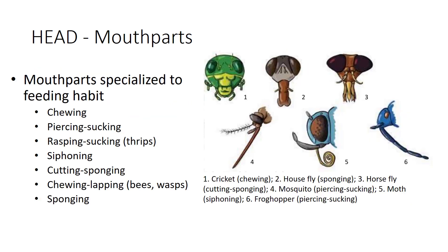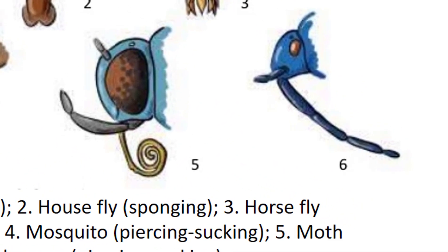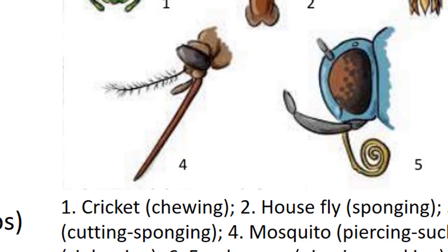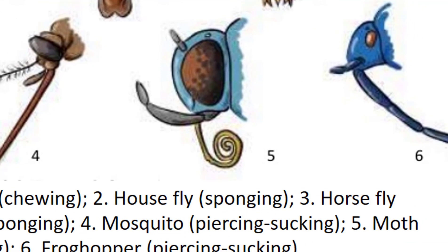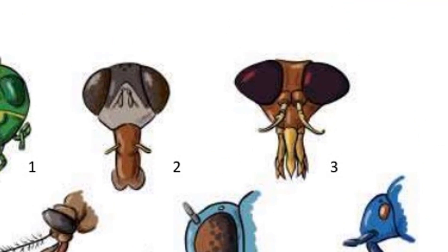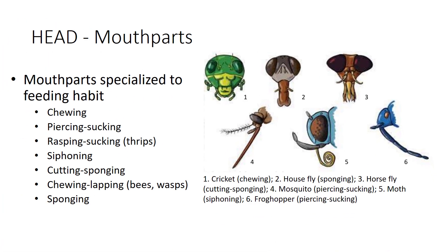Haustellate mouth parts are primarily used for sucking up liquids. They can be broken down into two subgroups—those that possess stylets and those that do not. Stylets are needle-like projections used to penetrate plant and animal tissue. Examples of insects with stylets include Hemiptera, Diptera flies like mosquitoes, and Siphonaptera. Some haustellate mouth parts lack stylets; unable to pierce tissues, these insects must rely on easily accessible food sources such as nectar at the base of a flower. One example is the long siphoning proboscis of butterflies and moths. Thrips have rasping-sucking mouth parts and scratch the surface of a leaf or flower to release fluids. Houseflies have sponging mouth parts, horseflies have cutting-sponging mouth parts so they slice into an animal then sponge the blood up. Bees and wasps have a unique chewing-lapping mouth part.